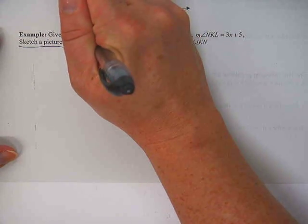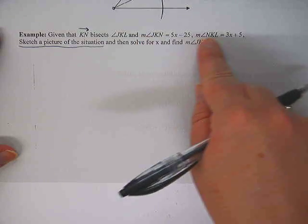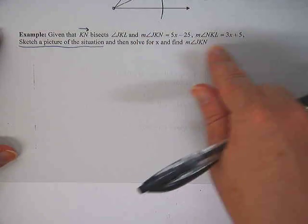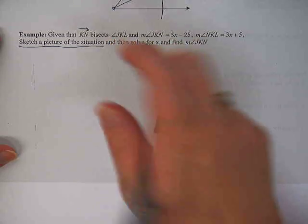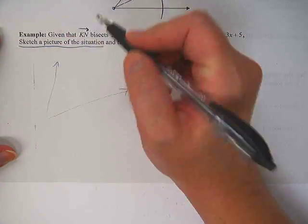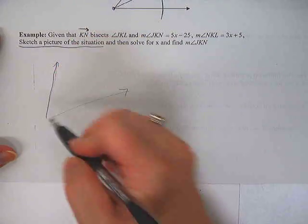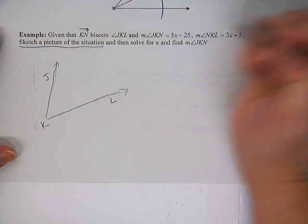Let's read through it really fast first so we kind of know what we're drawing. Given that KN, that's supposed to be a ray, ray KN bisects angle JKL, and then it has some measurements that I want to be able to write into my picture. So I'm going to start by creating angle JKL. So I can use a ruler if I want. It doesn't have to be even that perfect though. Just sketch an angle and label it J, K, L.